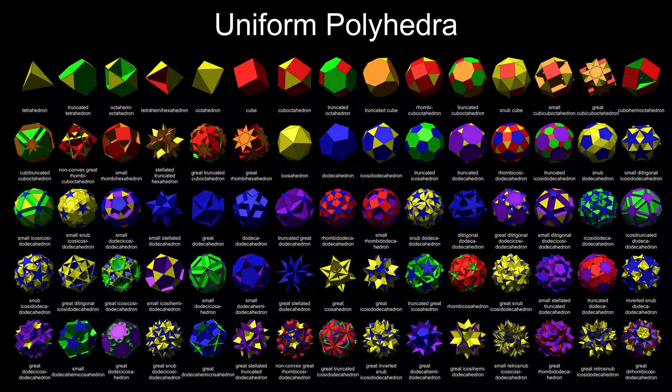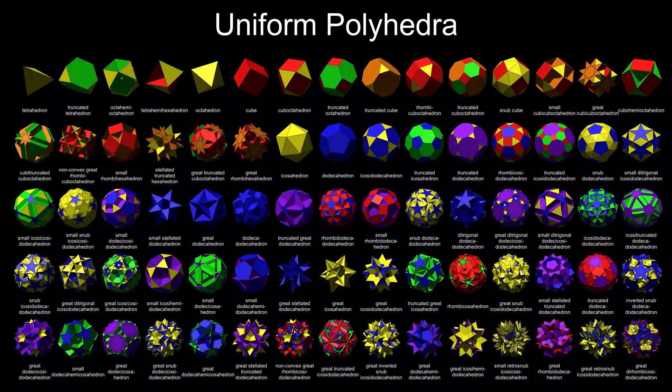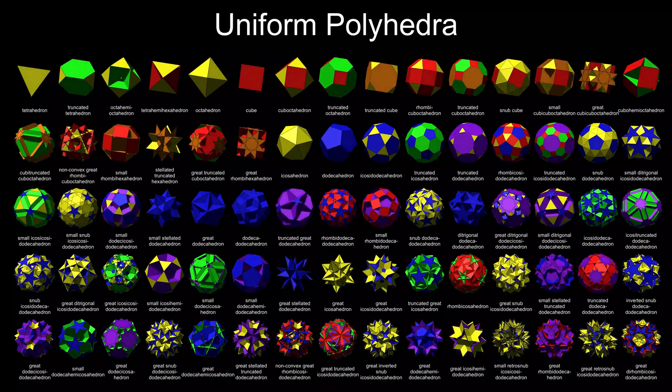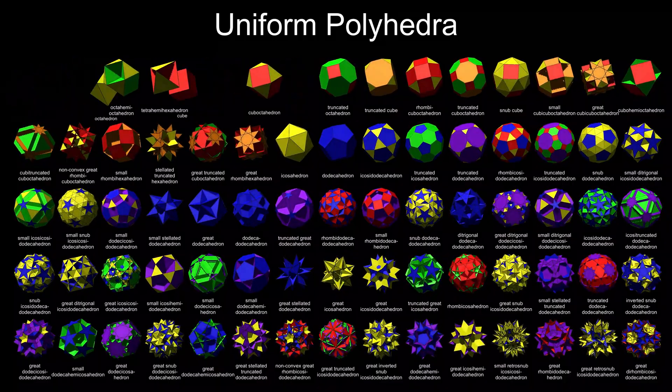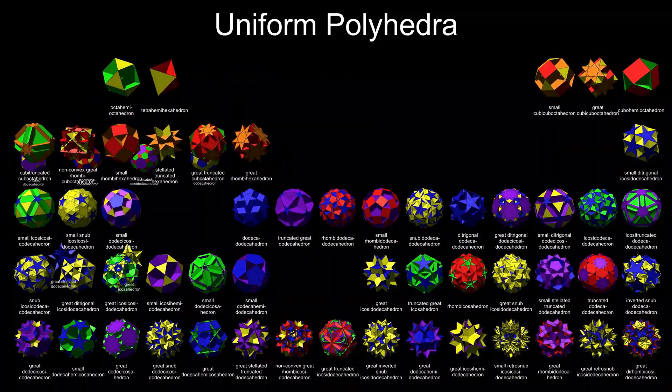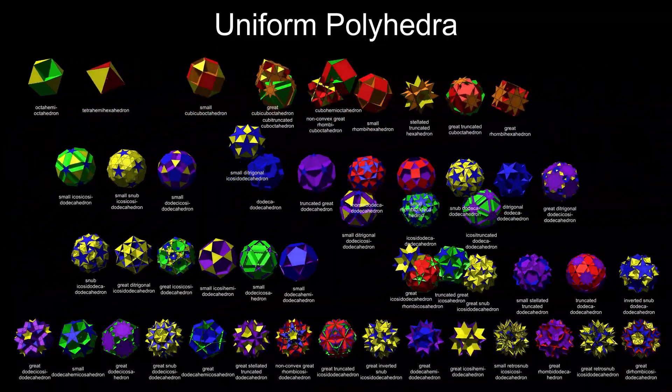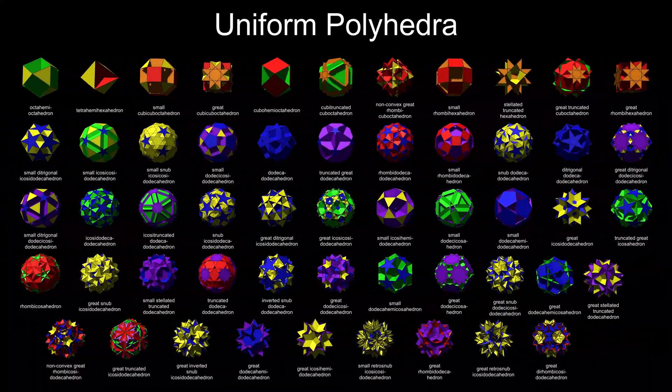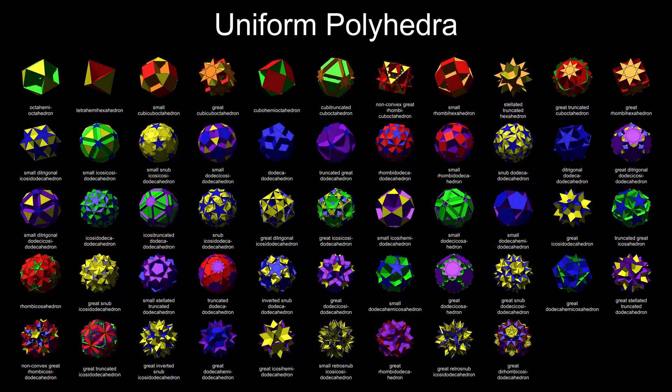Apart from the prisms and antiprisms, there are 75 uniform polyhedra. In previous videos I've covered the 5 Platonic solids, 13 Archimedean solids and 4 Kepler-Poinsot polyhedra.